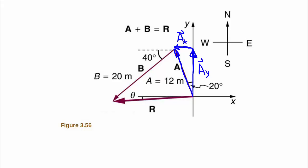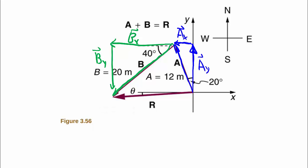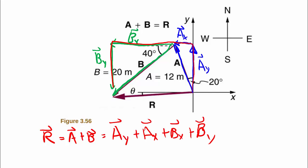Similarly, we will do for my B, we'll make a Bx and a By. So then you can see that my overall resultant, which is A plus B, it's equivalent to doing Ay plus Ax plus Bx plus By, right?